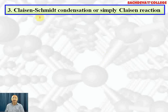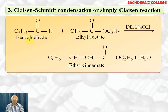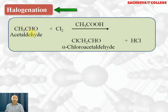Claisen condensation: benzaldehyde reacts with ethyl acetate. Ethyl acetate contains alpha hydrogen, so H⁺ is removed from that carbon generating a carbanion, which attacks benzaldehyde. Followed by dehydration, this gives ethyl cinnamate. Halogenation is also due to alpha hydrogen: acetaldehyde reacts with chlorine to form alpha-chloroacetaldehyde.